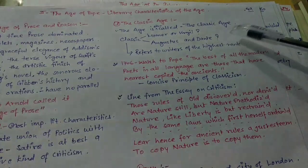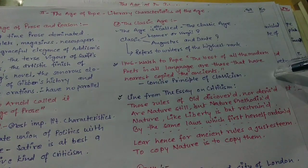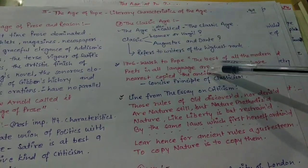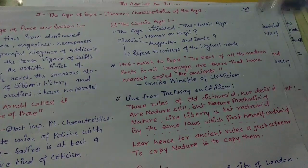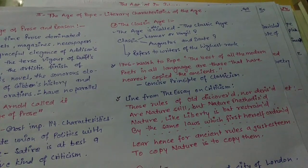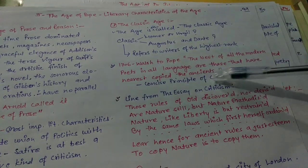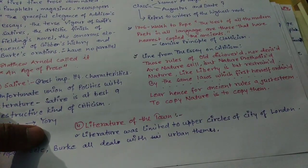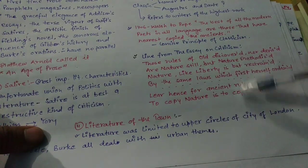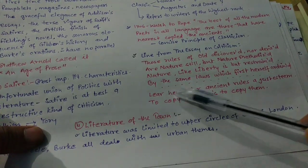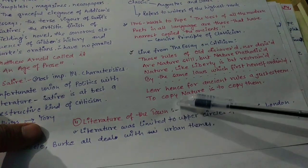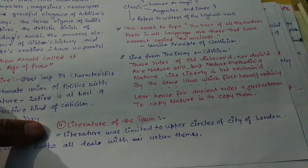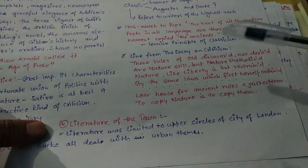In 1706, Walsh wrote to Pope: 'The best of all modern poets in all languages are those that have nearest copied the ancients.' This is the concise principle of classicism. Pope himself wrote in the Essay on Criticism: 'Those rules of old discovered, not devised, are Nature still, but Nature methodized. Nature, like liberty, is but restrained by the same laws which first herself ordained. Hence, to copy ancient rules is to copy them' — valuing and following the ancients as perfect literary models.